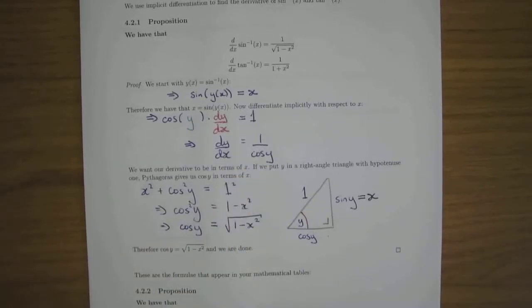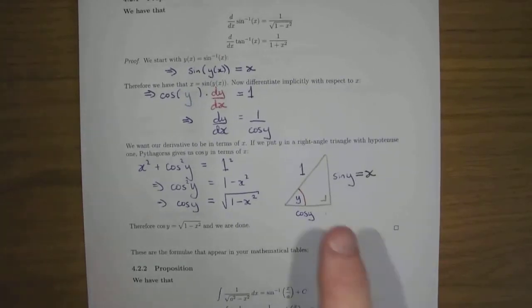To get cos y in terms of x, where x is sine of y, either you know about sine squared plus cos squared equal to one, then you can say cos squared is equal to one minus sine squared of y.